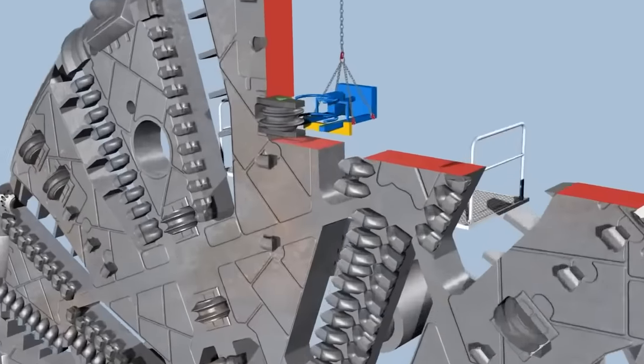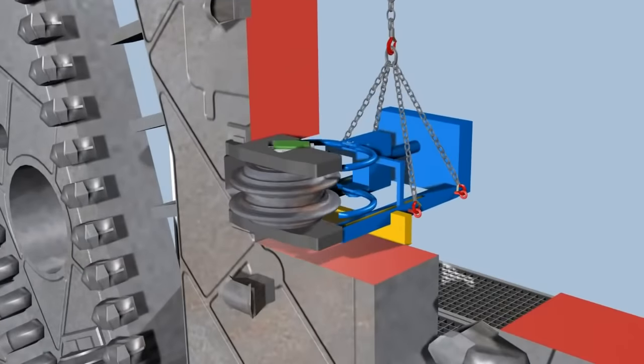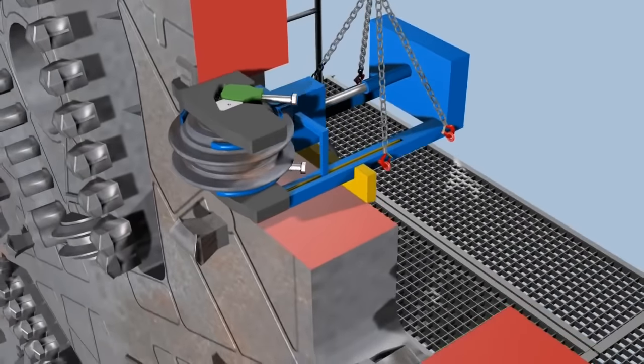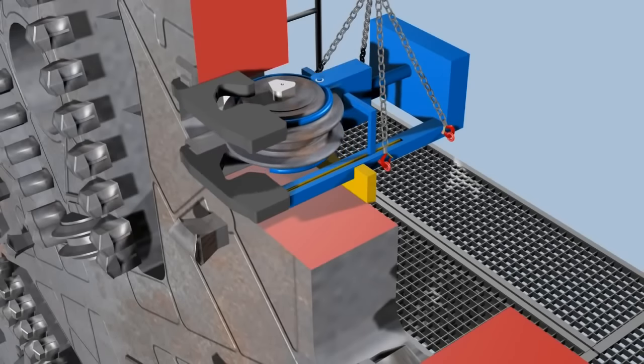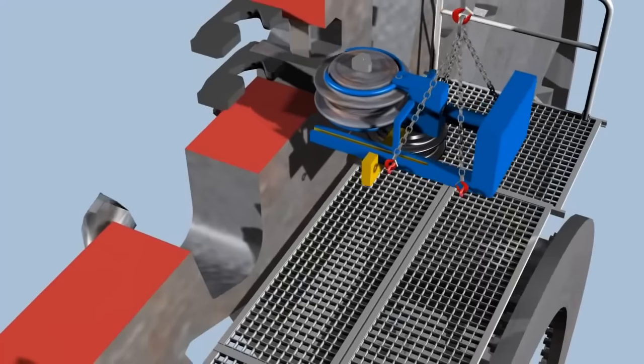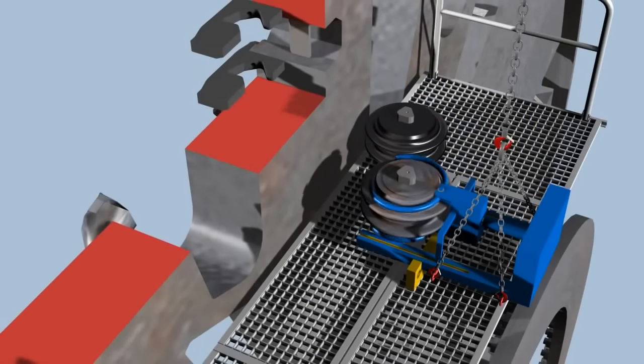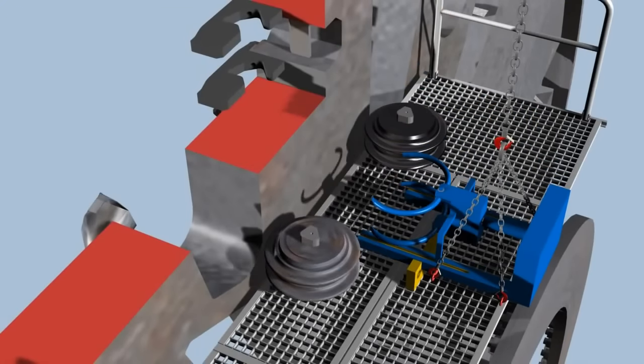A disk cutter is exchanged in three steps. Initially, the quick-release fasteners are loosened. Subsequently, the disk cutter is pulled out of its support with a special tool and, in a third step, replaced by a new one.